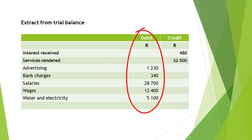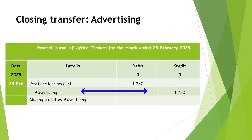Expense accounts have debit balances and we will therefore need a credit entry on each of the expense accounts to close it off. The advertising account is credited with R32,500 and the profit or loss account is debited with R32,500.